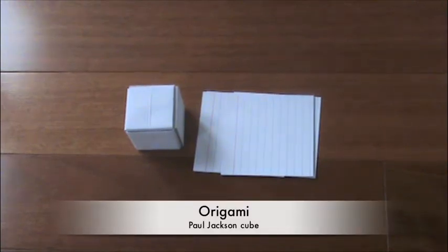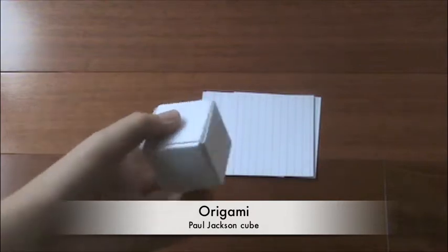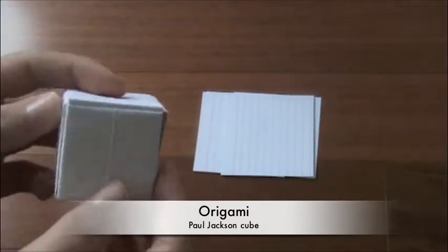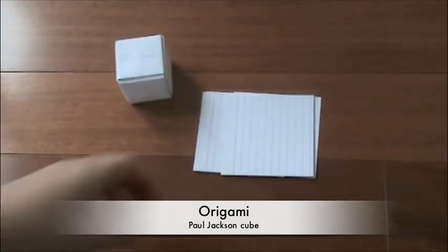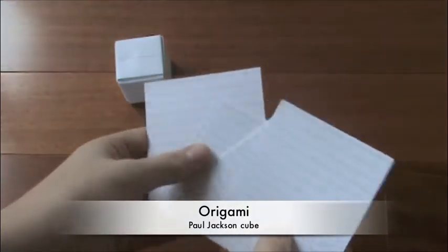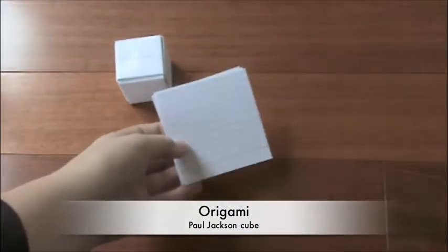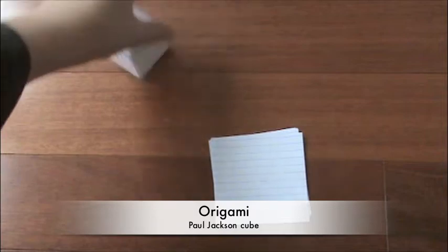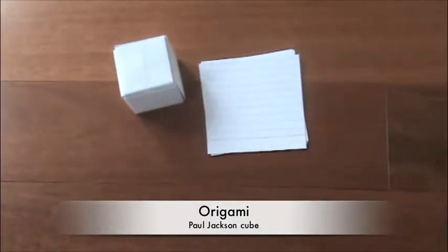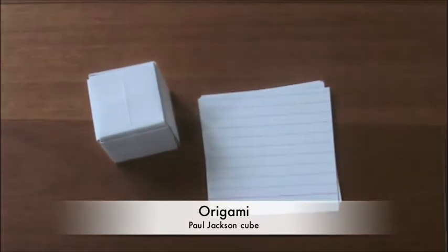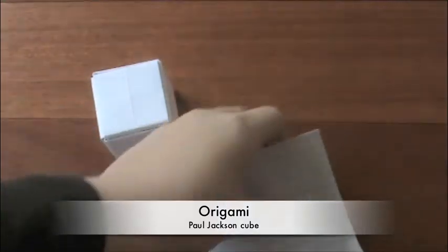Welcome to my tutorial on how to make an origami Jackson cube. This is a modular piece. The supplies you'll need are six pieces of square paper. I'm using index cards. You might be thinking this is a really long, hard modular piece that has all these papers, but no, the units are very simple. Let's get started.